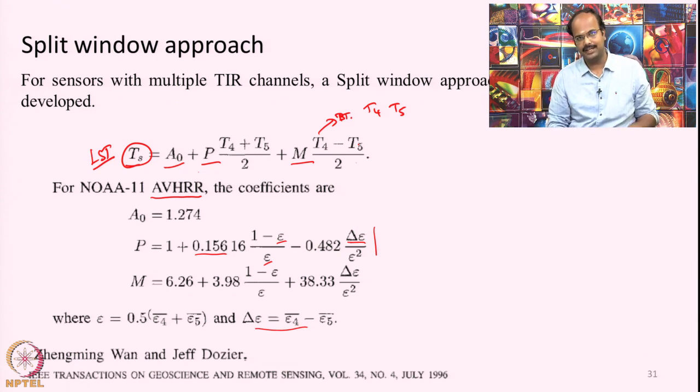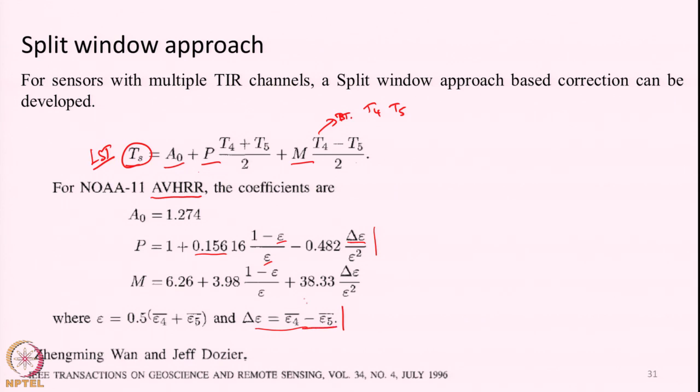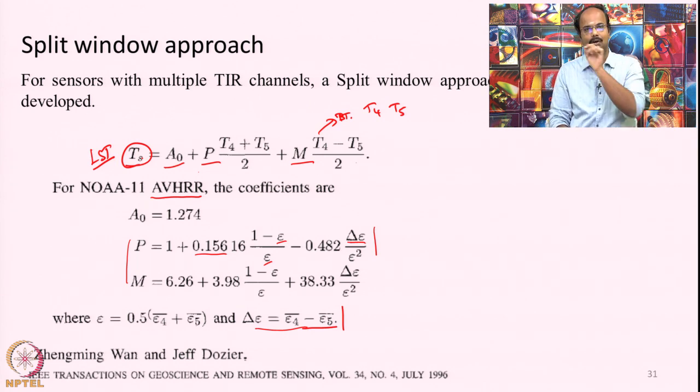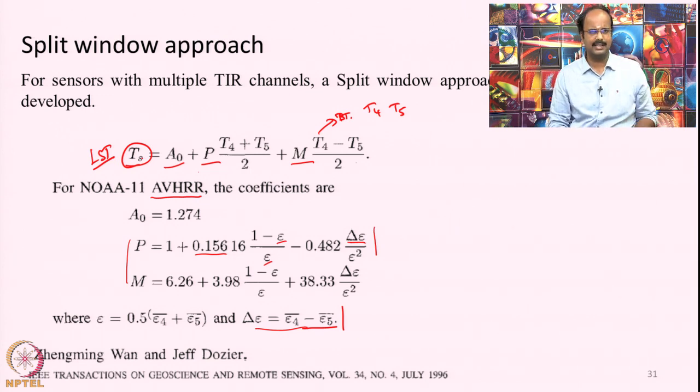Brightness temperature — which is sensor-absorbed radiance converted into blackbody temperature — will vary band to band due to atmospheric artifacts. But the actual land surface temperature should not vary regardless of which band we look at. Using these coefficients, brightness temperature is related to land surface temperature. Once surface emissivity is known, we substitute it, calculate the coefficients, and get LST. These equations are developed using radiative transfer models, simulating many atmospheric and surface conditions, and are refined extensively before the sensor is launched.